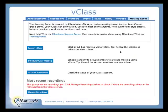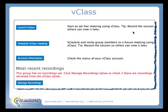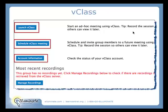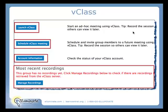My VClass is available from my LearnCentral group. I'm going to go right into my LearnCentral group, click on Meeting Room, and I can access my VClass. I'll be able to launch the VClass, schedule a VClass meeting, and if I'm the moderator of this group, I can access my account information. Just like your VOffice, I can record my VClass sessions. In this case I don't have any recordings, so I would click Manage Recordings, retrieve those from the server, give them custom names, add those tags, and decide how I want to treat them within my group.